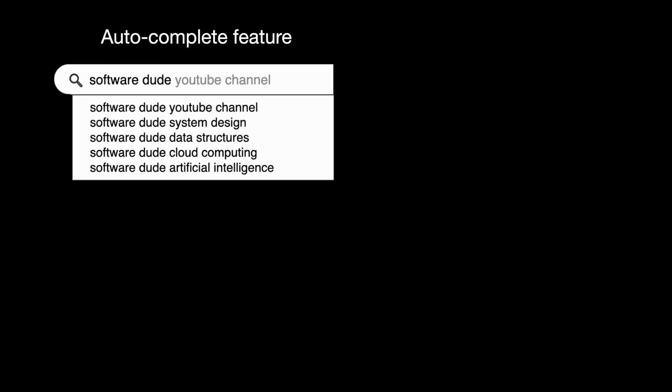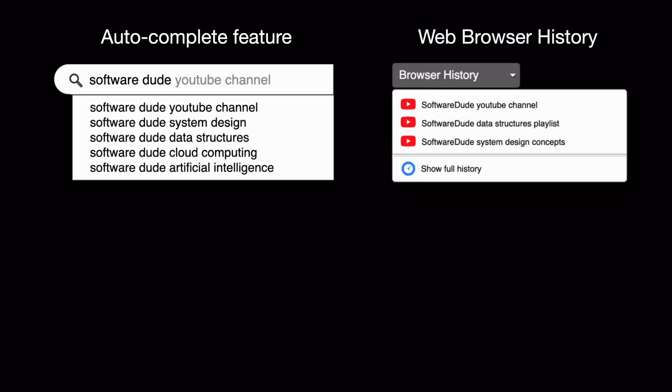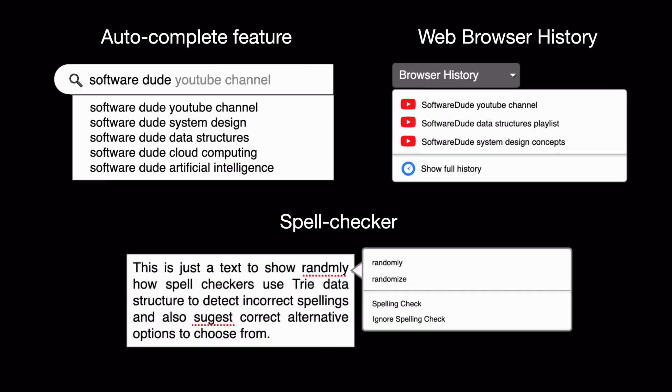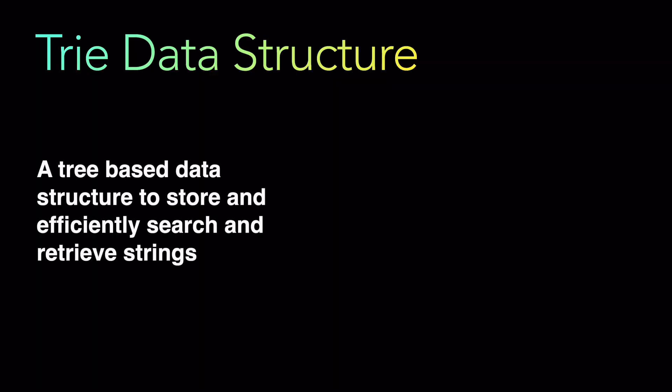First, let's look at the features and use cases. We know the autocomplete feature - whenever we are doing a search, we know how autocomplete works. There is also web browser history and spell checker. What do these have in common? They all use the Trie data structure underneath. There are multiple other real-world use cases, and as mentioned, it is one of the most commonly asked interview questions.